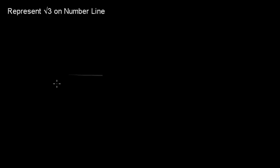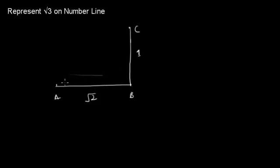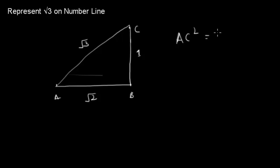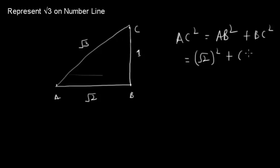Let's say we have a triangle ABC where AB is root 2 and BC is 1. Then we can find AC, which will be root 3. Using Pythagoras theorem: AC² = AB² + BC² = (root 2)² + 1² = 2 + 1 = 3. So AC is equal to root 3.